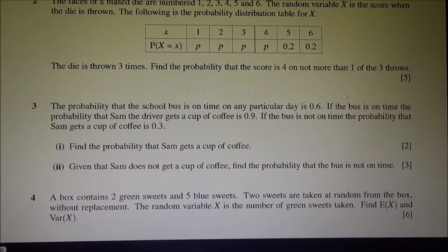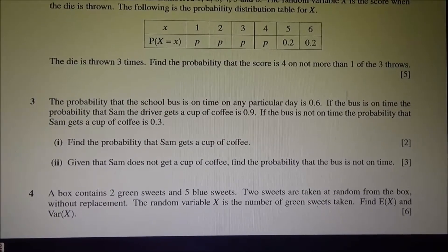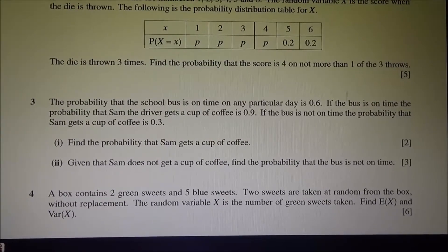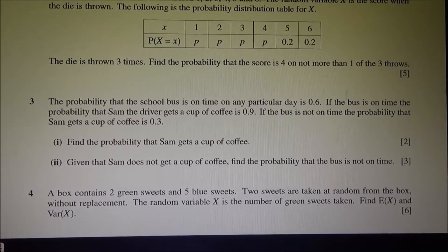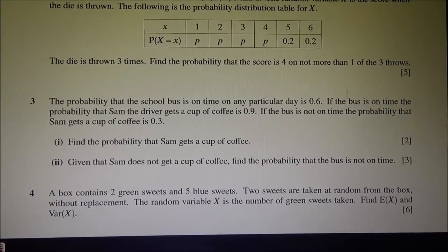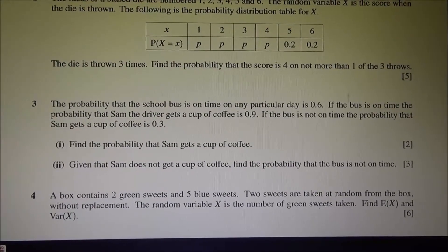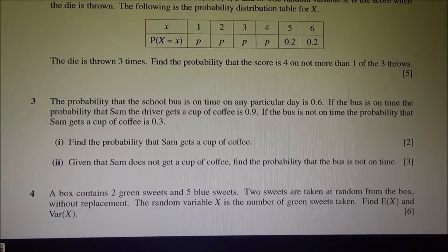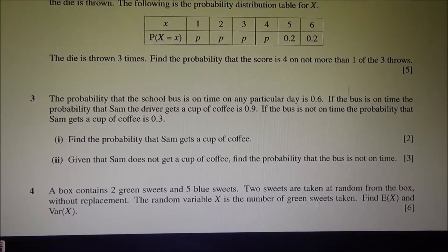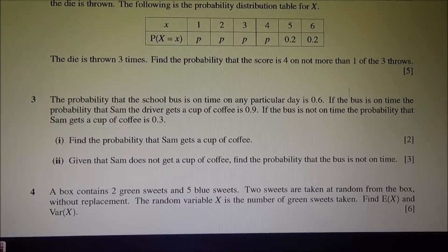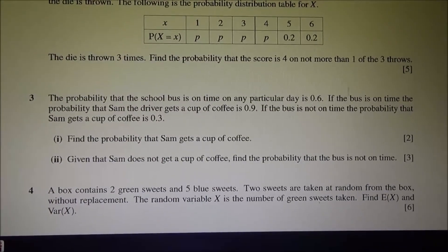The probability that the school bus is on time on any particular day is 0.6. If the bus is on time, the probability that Sam, the driver, gets a cup of coffee is 0.9. If the bus is not on time, the probability that Sam gets a cup of coffee is 0.3.